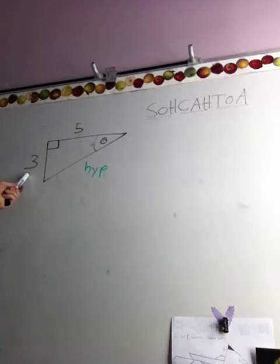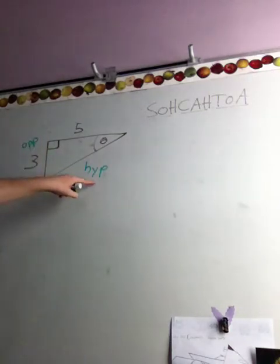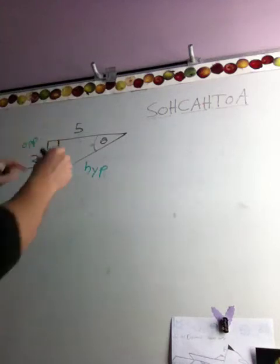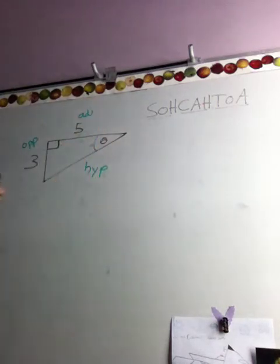This three, well, it is opposite the angle we're looking for, so it's called opposite. And if this is hypotenuse and this is opposite, then this one must be adjacent. That's how you do it. Find the hypotenuse, find the opposite, and the adjacent is the third one.